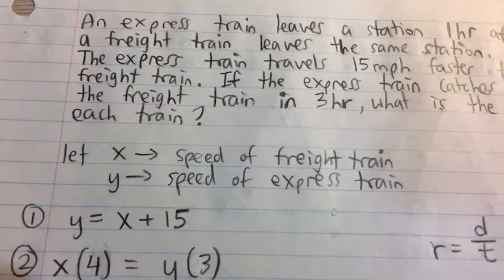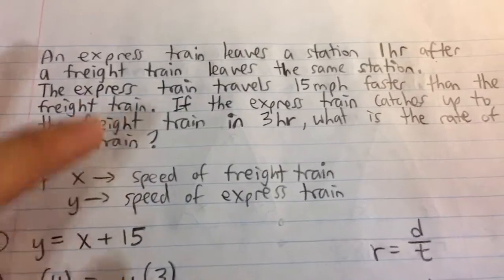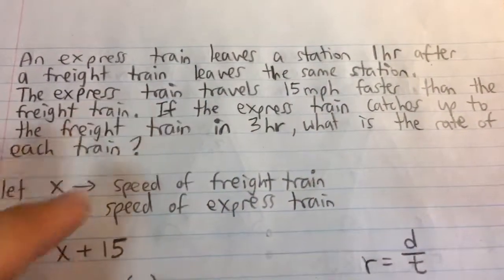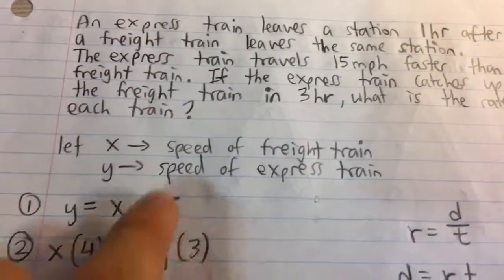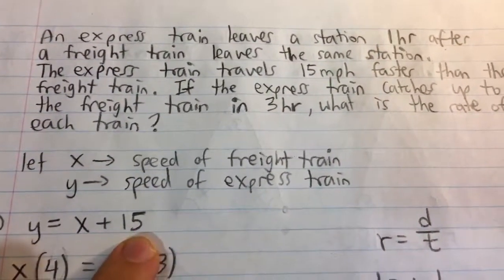But first off, I'm going to set this first equation, which relates the speeds of the two trains. Because it says that the express train is 15 miles per hour faster, the speed of the express train, y, is equal to the speed of the freight train plus 15.